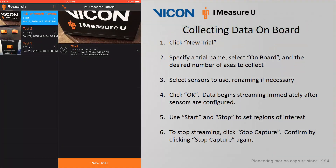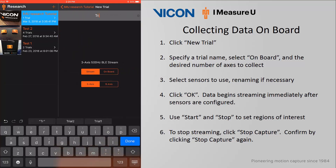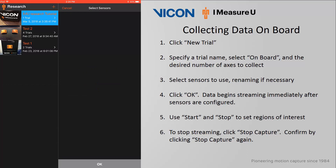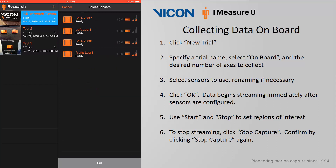In this next example, I will choose to save data to the onboard sensor memory and record 9 axes. I will click on New Trial, specify a trial name — in this case Trial 2 — select Onboard and 9 axes, and then click Start Capture.